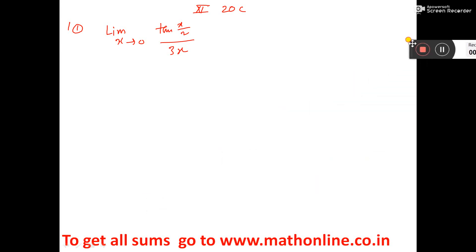Let us solve this term. I am dividing tan x by 2 by x by 2 and x by 2 by 3x. You see here, denominator 3x was there, numerator tan x by 2 was there.